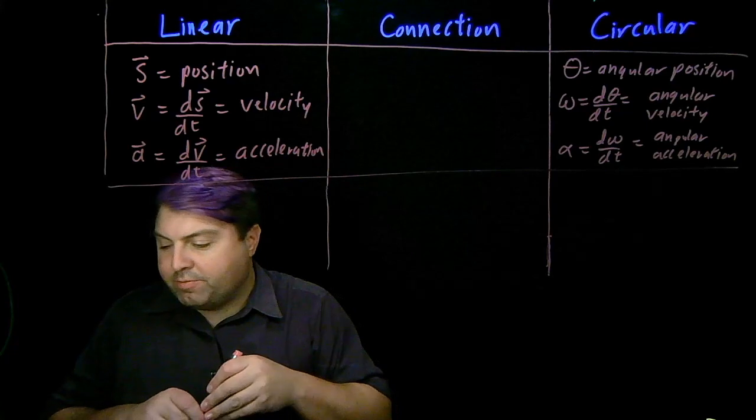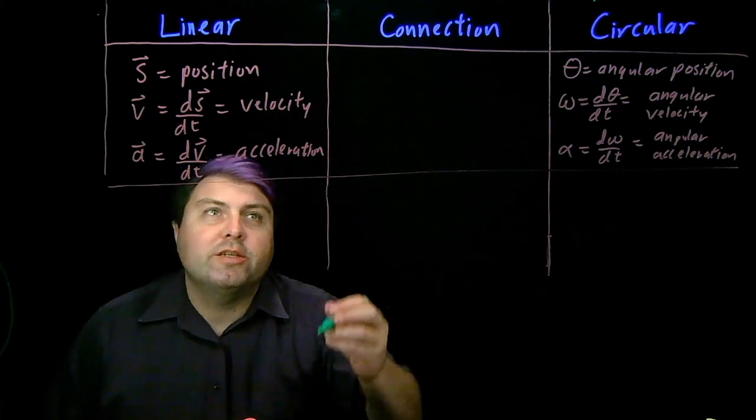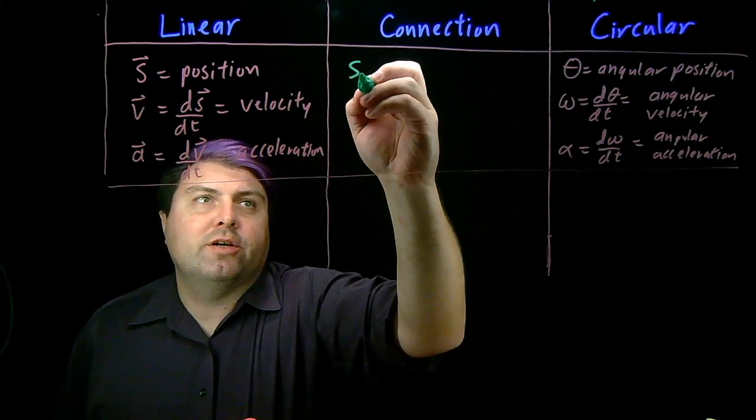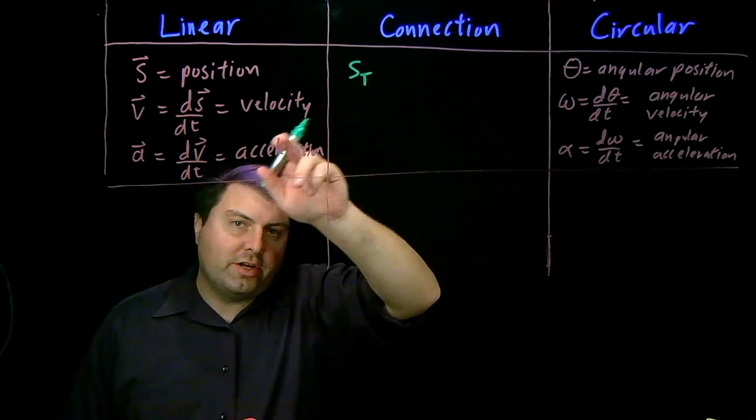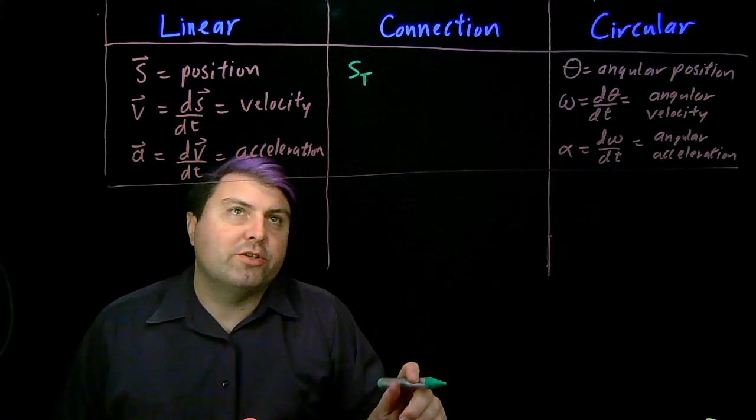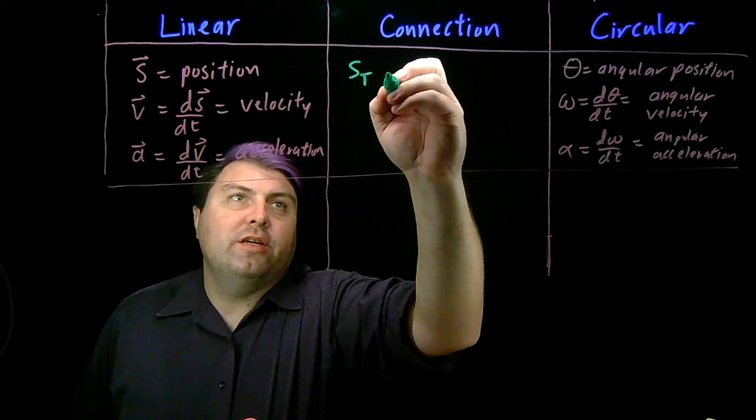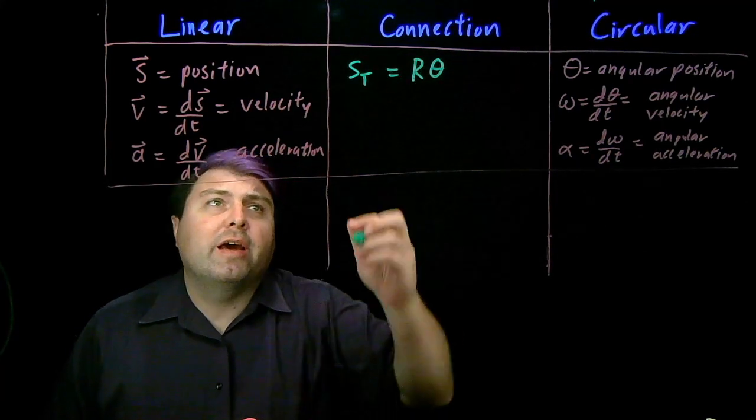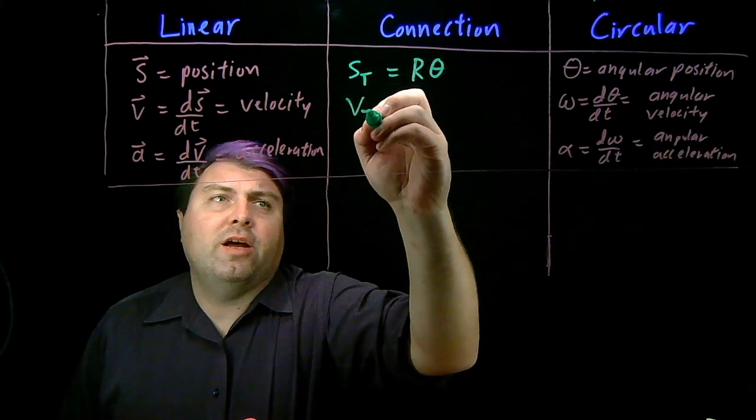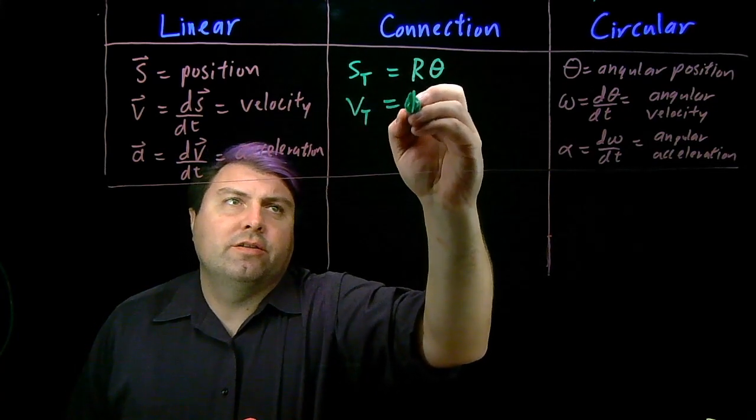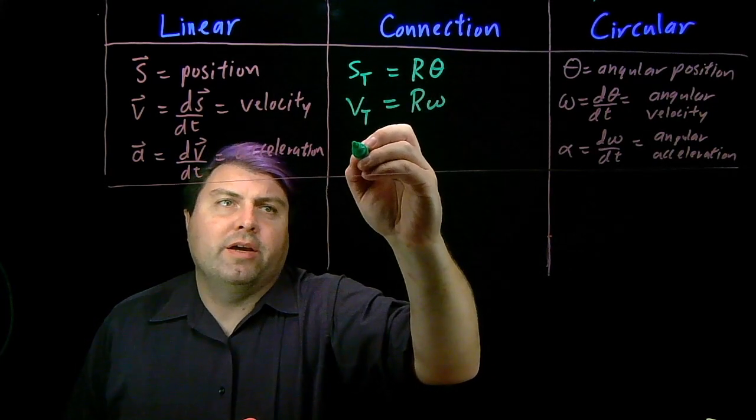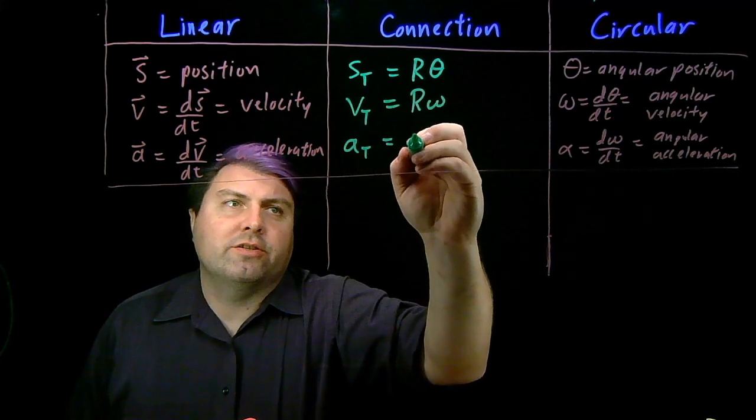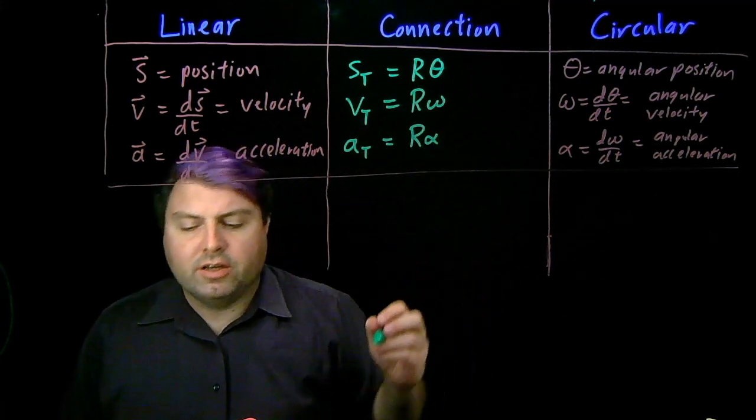So our connection between these is we can talk about our position along the tangential of the circular motion, s_t, is equal to r times theta. This is our arc length equation. And then our other connections are that the velocity along the tangential direction is r omega, and the acceleration along the tangential direction is r alpha.